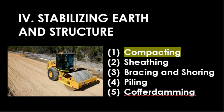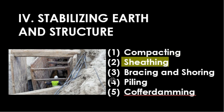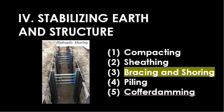For compacting, it is the compressing or packing down of earth to make it firm and to avoid voids. For sheathing, it forms walls to keep earth out of excavated areas. Common sheathing materials are metal panels and wood planks or panels, which are supported by bracing and shoring.